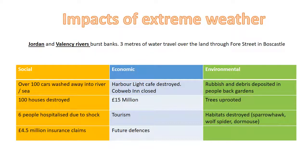It might be worth printing this slide off — 'Impacts: Extreme Weather.' Your two named rivers there are the Jordan and the Valencia; they burst their banks. That leads to three meters of water traveling over land through Fore Street in Boscastle. Remember you've got 89 millimeters of rainfall falling in essentially one hour — about a month's worth of rainfall — and as a result your two rivers burst their banks and three meters of water travel over the land through Fore Street.